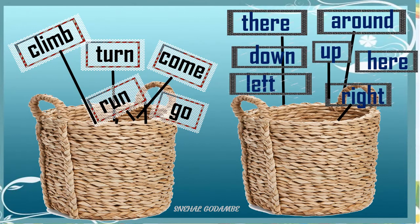Here are two baskets. From the first basket I will read the words: climb, turn, come, go, and run. Now the second basket has blue flashcards: there, around, down, up, here, left, and right.